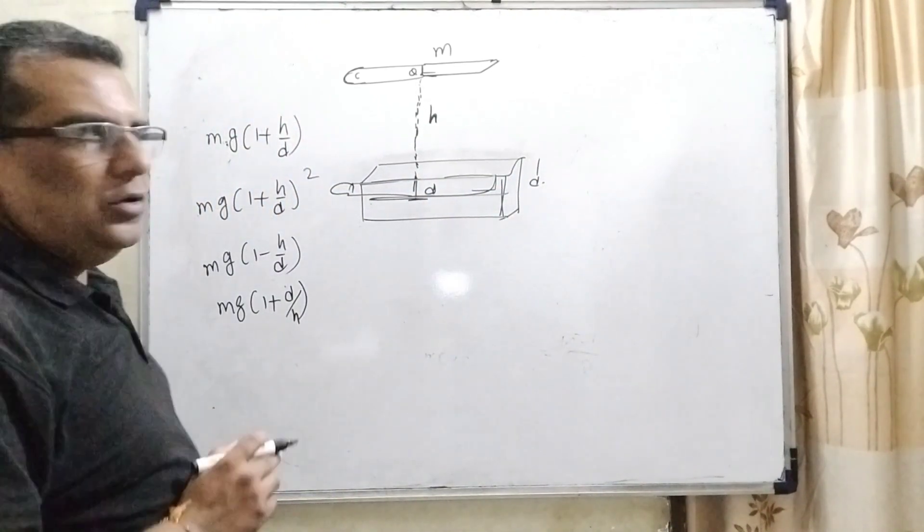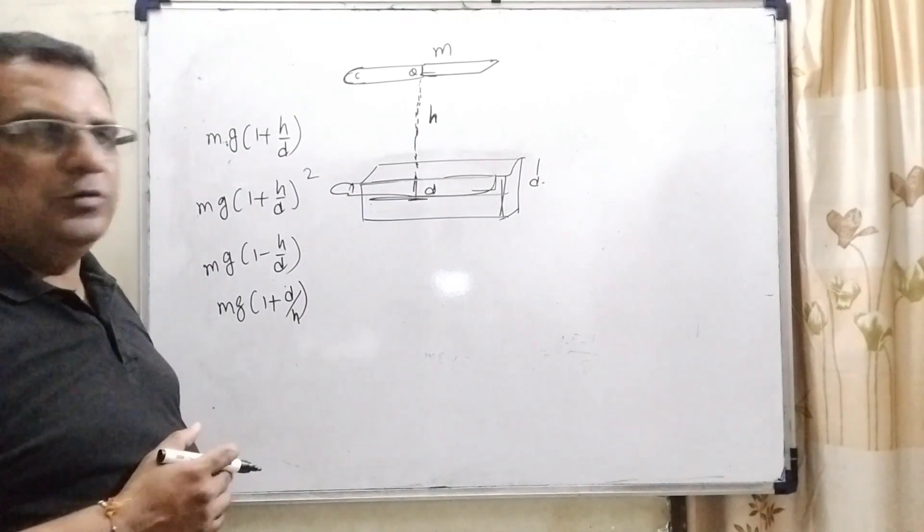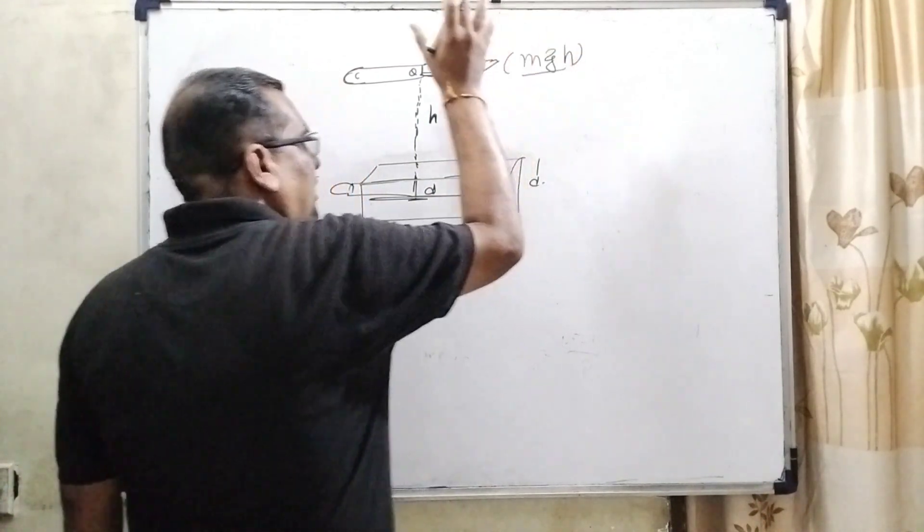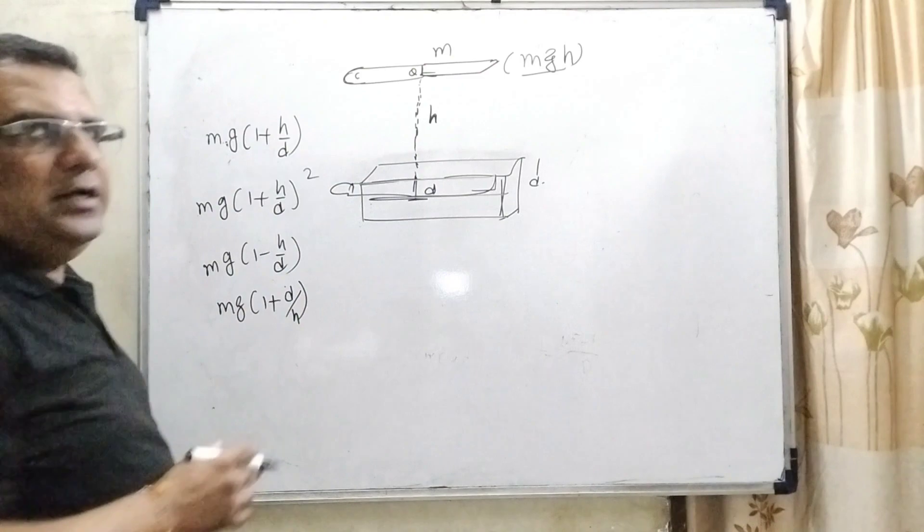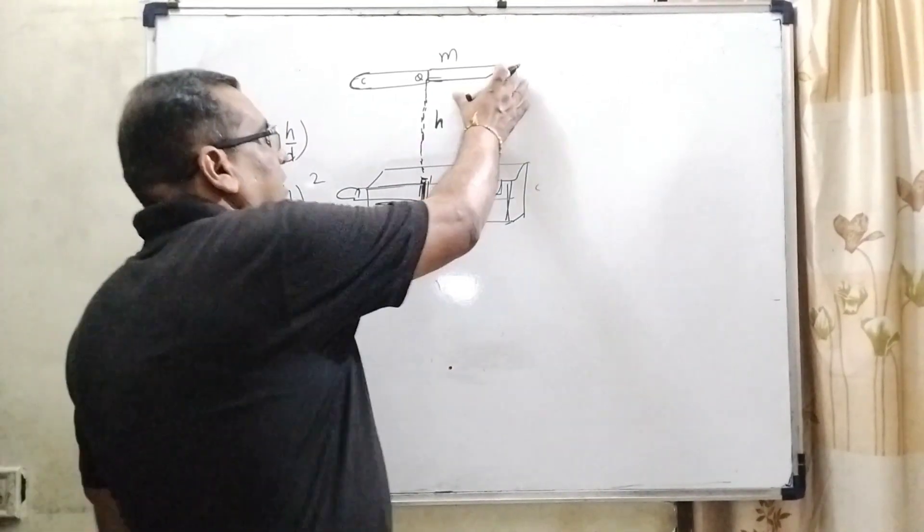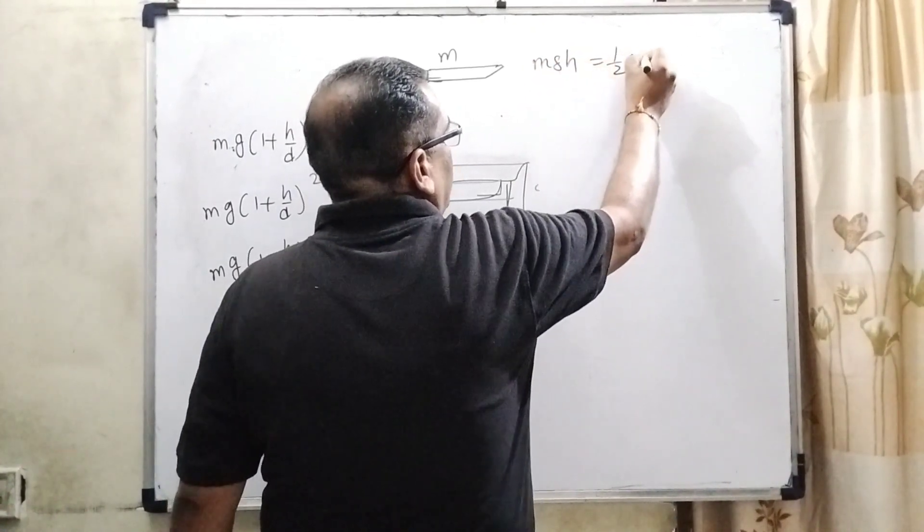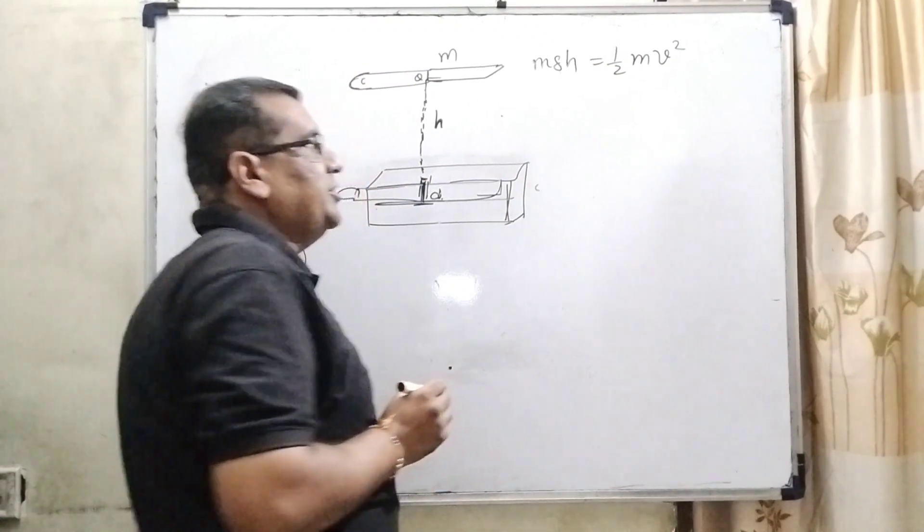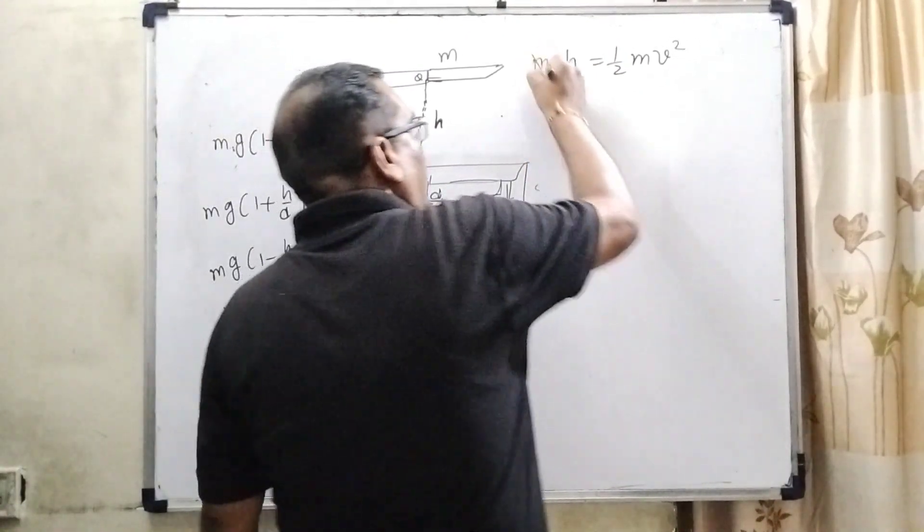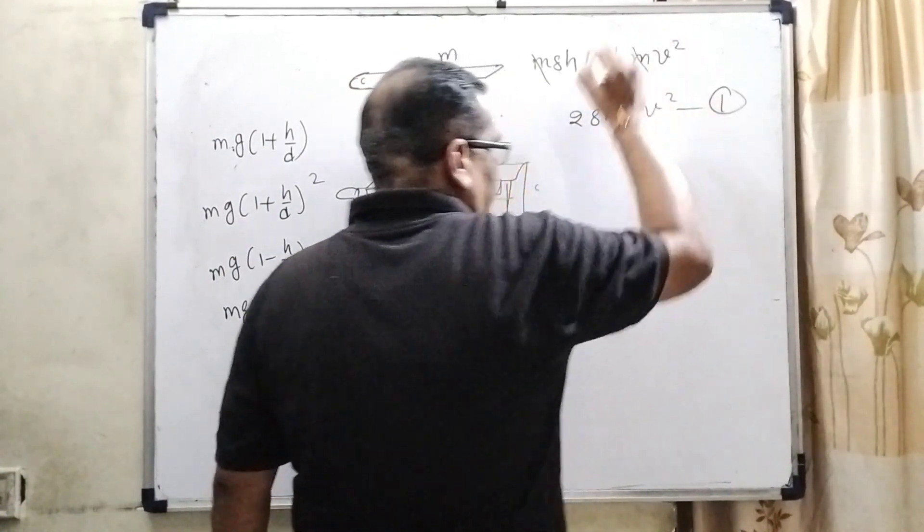This question is based on laws of conservation of energy. So we are using this energy which consists of the potential energy, and this potential energy converts into kinetic energy. Now here this potential energy converts into kinetic energy by using laws of conservation of energy: MGH equal to kinetic energy. So M cancels out, 2GH equal to V square. Put the name of equation first.